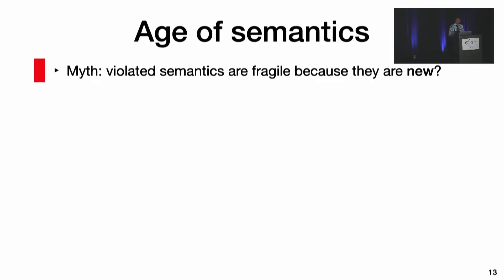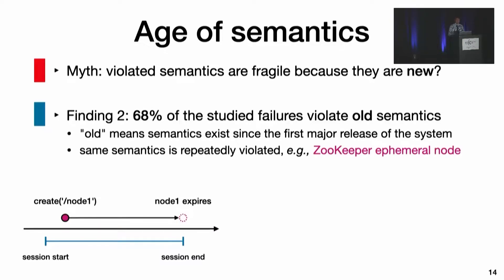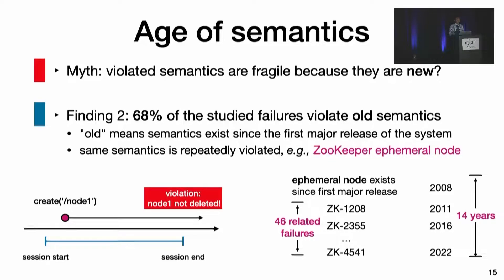Why are there so many silent failures? Since the studied systems keep adding new features, one might guess these violated semantics come from new features. But we find that although most studied failures occurred after two years since initial release, in 68% of cases the violated semantics are old, existing since the first major release of the system. In many cases, we see the same semantics violated over and over again. For example, ZooKeeper has a feature called ephemeral node with a simple semantics: an ephemeral node exists as long as the session that created it is alive. This semantic has existed since 2008, yet users report production failures that violate it even 14 years later.